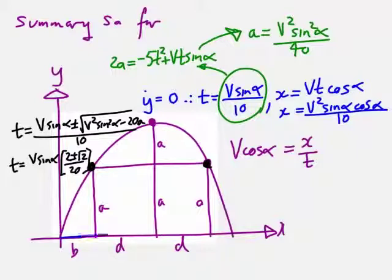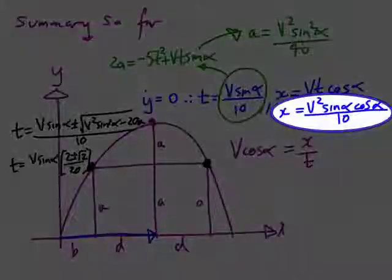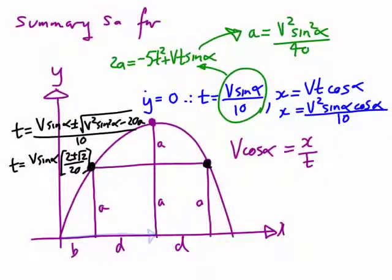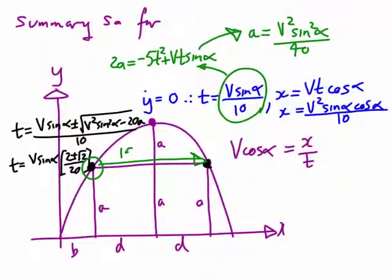Now let's look at the displacements. b plus d is the displacement from launch to below the maximum. The bird is travelling at 15 metres per second, so in time t he would travel 15t. This distance 2d is covered in the same time it takes the ball to reach height a, which is v sine alpha times (2 plus root 2) on 20.